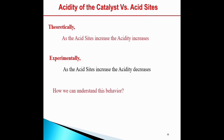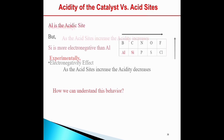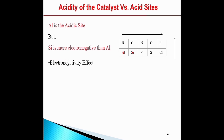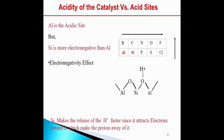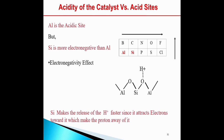How can we understand this behavior? Aluminum is the acid site, but silicon is more electronegative than aluminum. This electronegativity effect means silicon makes the release of hydrogen ions faster since it attracts electrons toward it, which makes the proton move away from it.